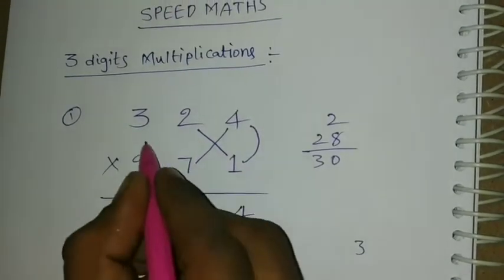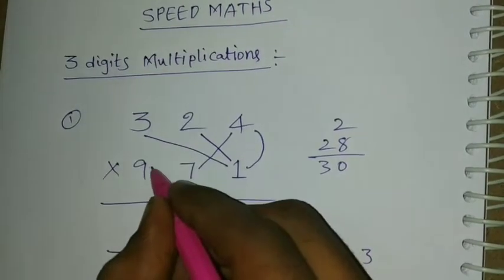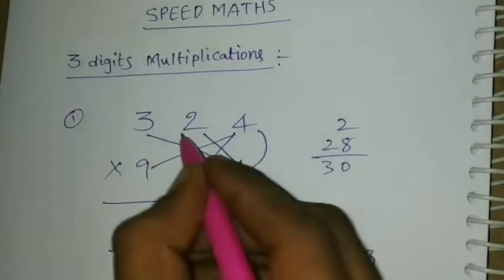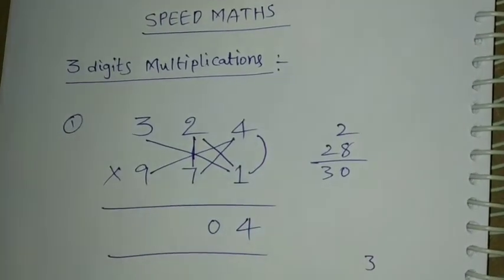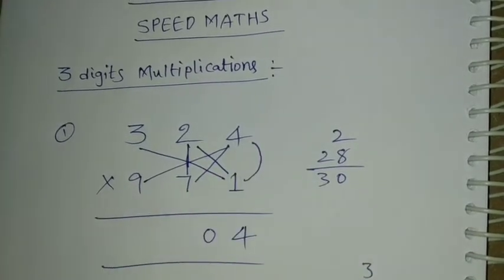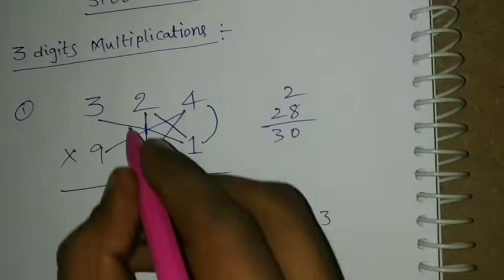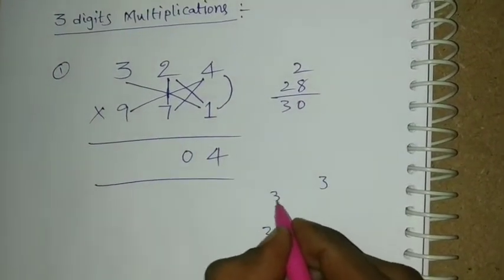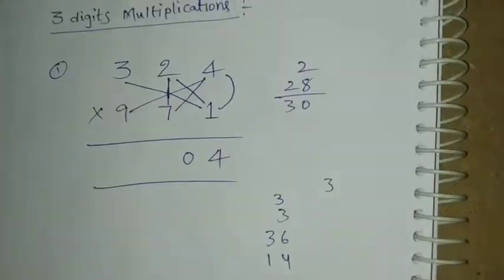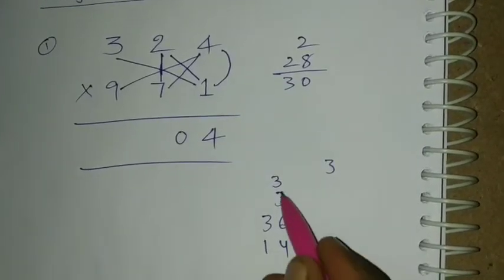Next, first digit last digit, first digit last digit middle digits. That means 3 into 1 is 3. 9 into 4 is 36. 2 into 7 is 14, equal to 3 in the carry.